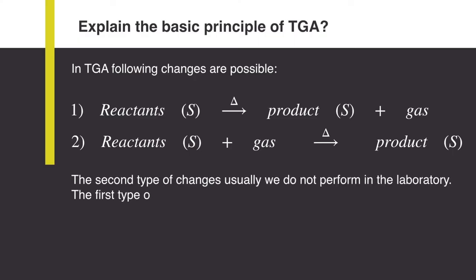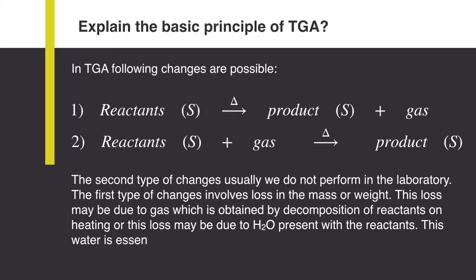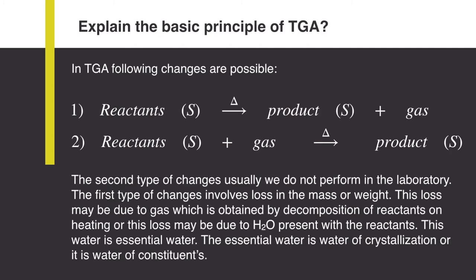The first type of change involves loss in mass or weight. This loss may be due to gas obtained by decomposition of the reactants on heating, or due to water molecules present in the reactant. This water is essential water, water of crystallization, or water of constituents.